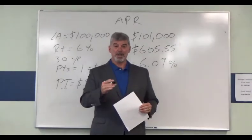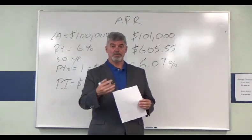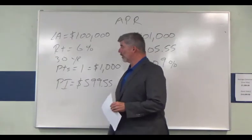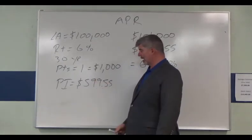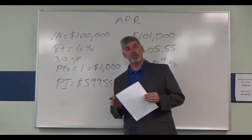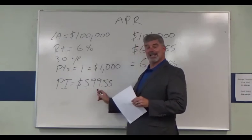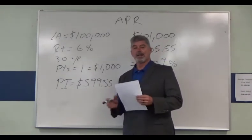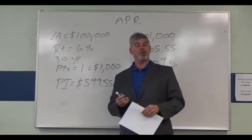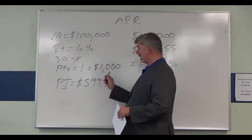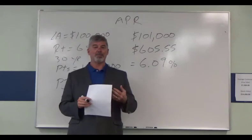Now I'm going to show you another way of calculating APR. This is what's more commonly used for longer-term loans, like 30-year mortgages. In this scenario, we have a $100,000 loan, the rate is 6%, one point, and the term is 30 years. The principal and interest payment from a mortgage calculator is $599.55 a month. Remember that in real estate, one point is 1% of the loan amount, so one point on a $100,000 loan is $1,000.